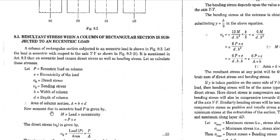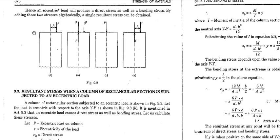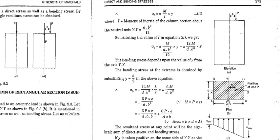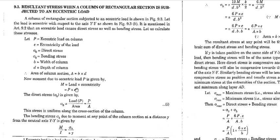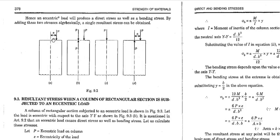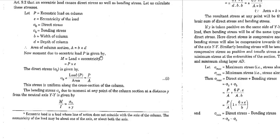Here b is the width and d is the depth of the column, so the area will be b × d. Looking at the cross-section: the longer dimension is b and the shorter dimension is d. The moment M will be load times eccentricity — P × e — since moment equals load into distance, and here the distance is the eccentricity e. This moment M will be expressed in kilonewton-meters or whatever unit is being used.